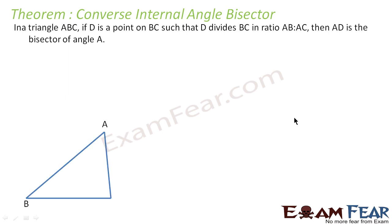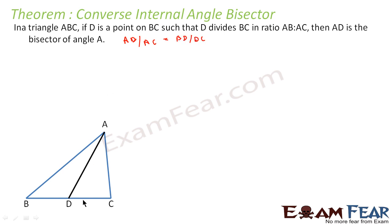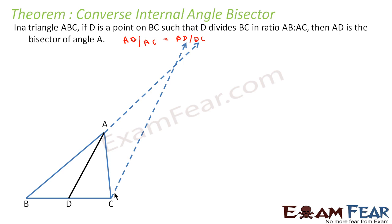Let us take triangle ABC where D is a point on BC such that AB by AC is equal to BD by DC — that is given. If this is the case, then AD has to be the angle bisector of angle A. To prove this, we extend AB and then take the compass and make sure that AE is equal to AC. This is the point E.